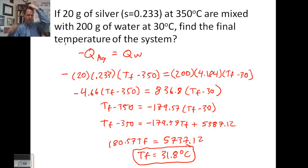That temperature should end up between 350 and 30. The reason it is so much closer to 30 is because the water has a much larger mass, 10 times as much mass, and a significantly larger specific heat, meaning it takes significantly more energy to raise one gram of the substance by one degree Celsius.